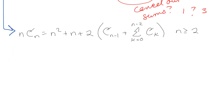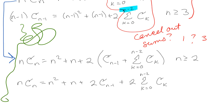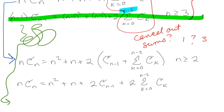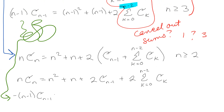Now we subtract the equation for (n − 1)·C(n − 1) from the rewritten n·C(n) equation. The minus side gives: −(n − 1)·C(n − 1) = −(n² − 2n + 1) − (n − 1) − 2 times the sum from k = 0 to n − 2 of C(k).